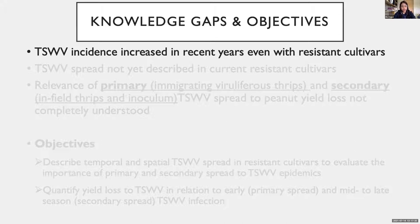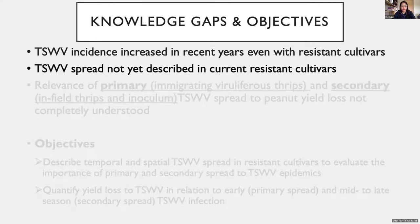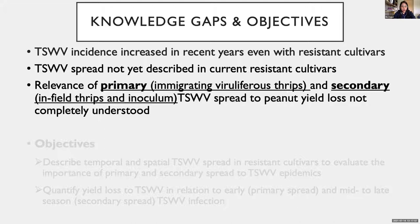We have observed TSWV incidence and associated yield loss in an upward trend, even when resistant cultivars are largely used in recent years. Season-long TSWV spread has been observed, but the virus spread in resistant cultivars currently used has not been fully understood or characterized. TSWV infection can come from primary spread, when viruliferous thrips immigrate to peanut fields, or from secondary spread, when in-field thrips populations transmit TSWV from plant to plant. The relevance of primary and secondary spread to peanut yield loss in resistant cultivars is not completely understood.